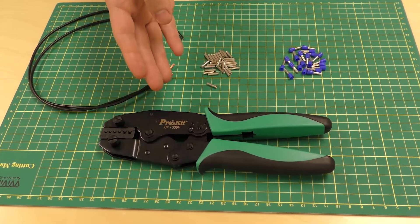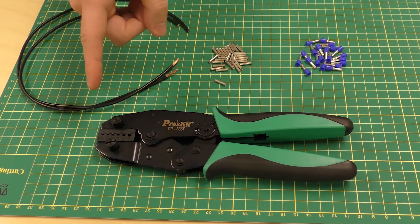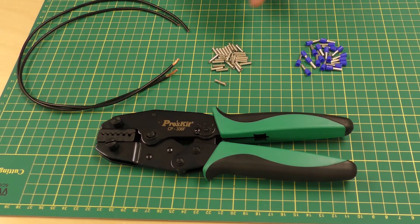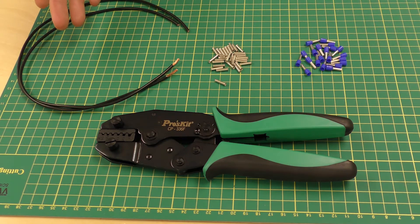In front of me I have the 300001 Lunar Series crimp tool for wire ferrules, 22 to 12 gauge, both insulated and non-insulated ferrules, and my pre-stripped copper wire.